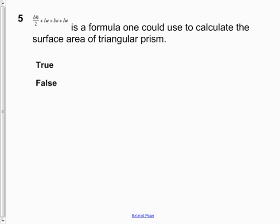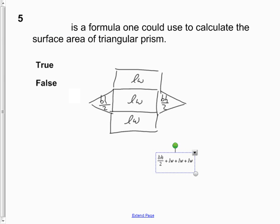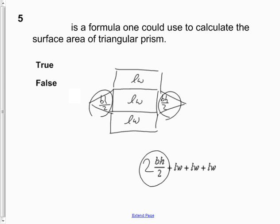Question 5: the formula height divided by 2 plus 3LW is said to calculate the surface area of a triangular prism. If you draw the net of your triangular prism, you see there are five faces — three rectangles and two triangles. What's wrong with this formula is it's missing the coefficient of 2 to describe the two triangles. So if you said true, you're wrong. The answer is false because the formula is missing the 2 for the triangular faces.